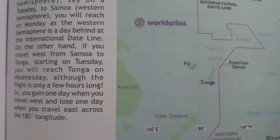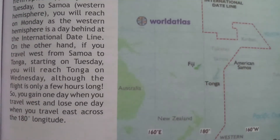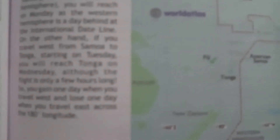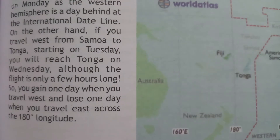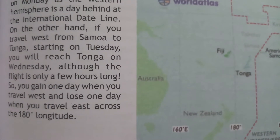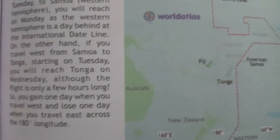The flight is only a few hours long, so you gain one day when you travel West and lose one day when you travel East across the 180-degree longitude.